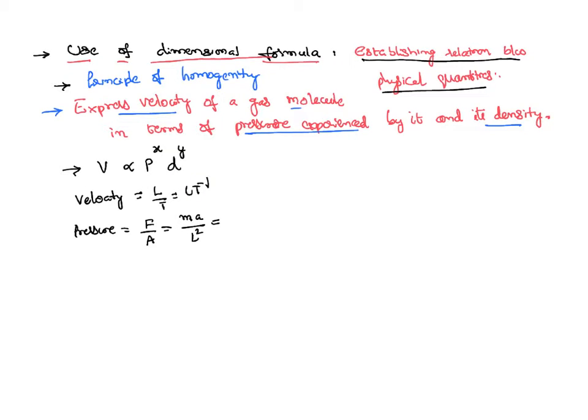So pressure has dimensions of ML^-1T^-2. Like this, density—we know density is defined as mass per unit volume.